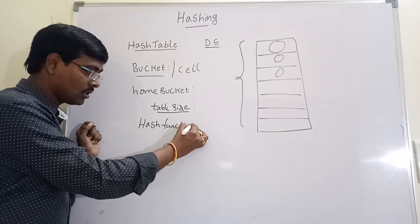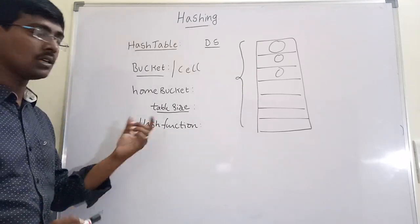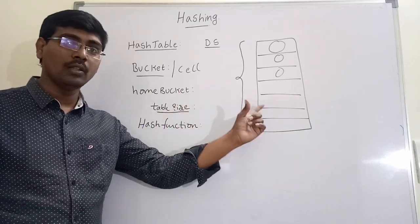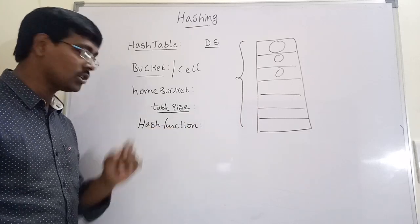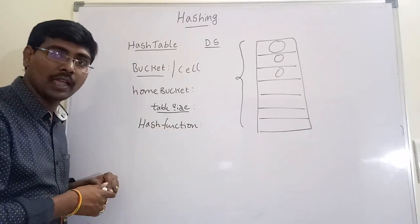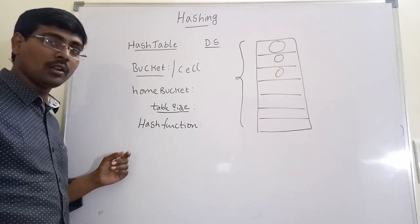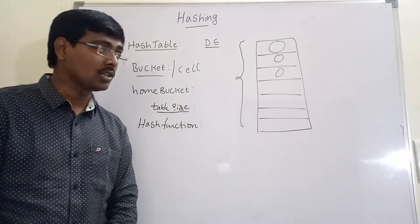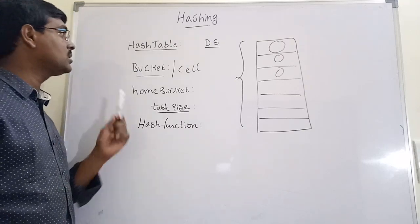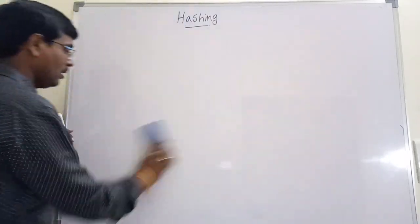The technique that is used for placing the records into the hash table is called a hash function. By using any technique we are placing the records into the hash table — that technique or function is called hash function. In this session we will discuss some of the hash functions used for placing records into the table. If you are using one function for storing records, for retrieving also we have to use the same function.